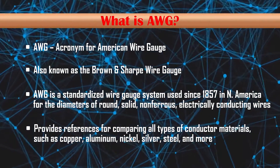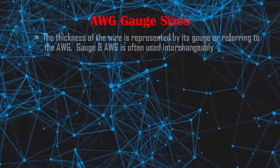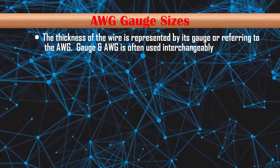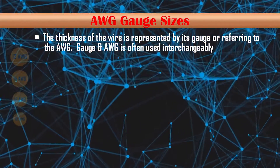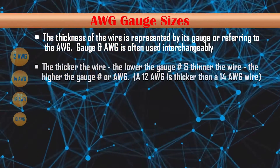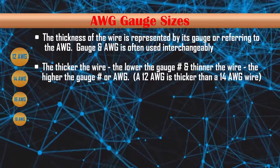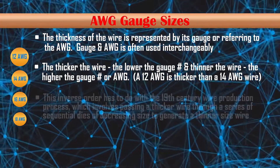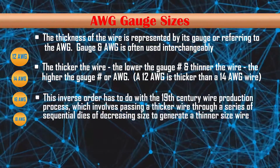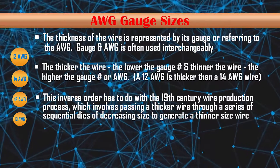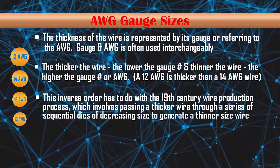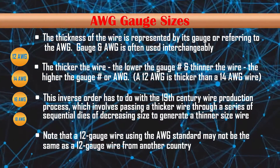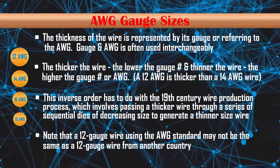AWG gauge sizes represent the thickness of the wire. The thicker the wire, the lower the gauge number, and the thinner the wire, the higher the gauge number. For example, a 12 AWG is thicker than a 14 AWG wire. This inverse order relates to the 19th century wire production process, which involves passing a thicker wire through a series of sequential dies of decreasing size to generate a thinner wire. Note that a 12 gauge wire using the AWG standard may not be the same as a 12 gauge wire from another country.